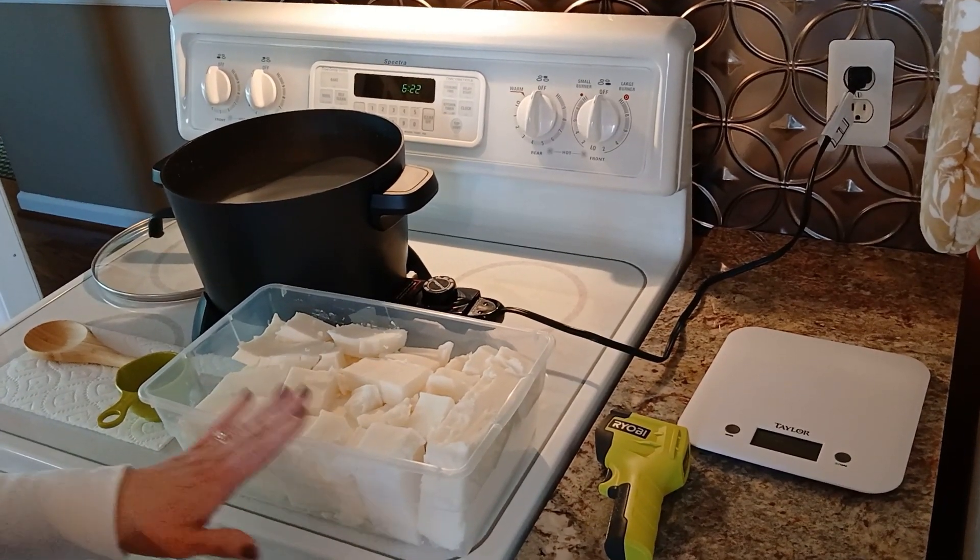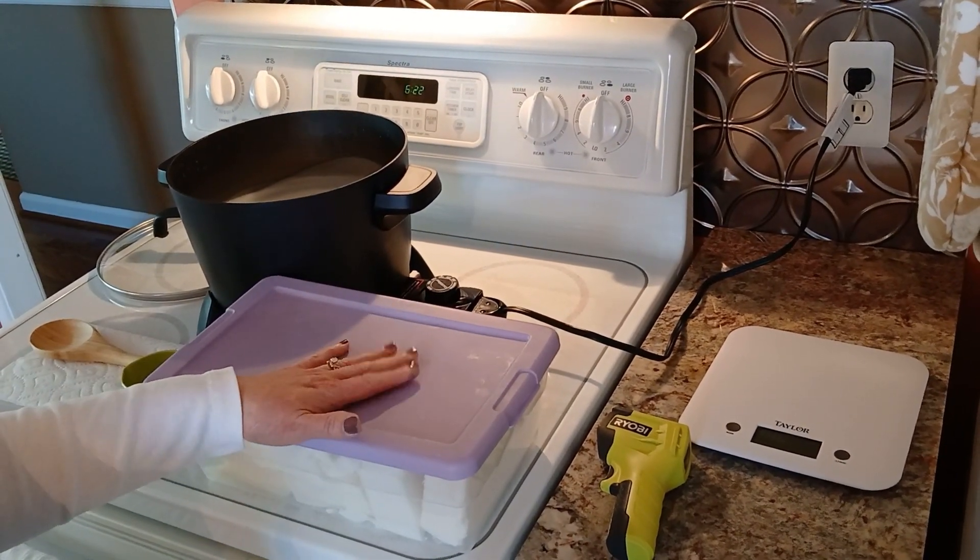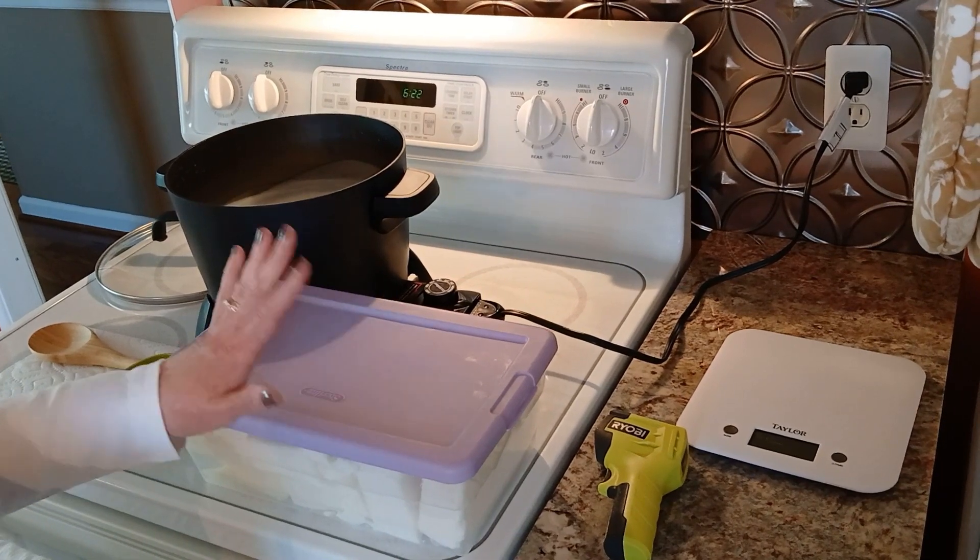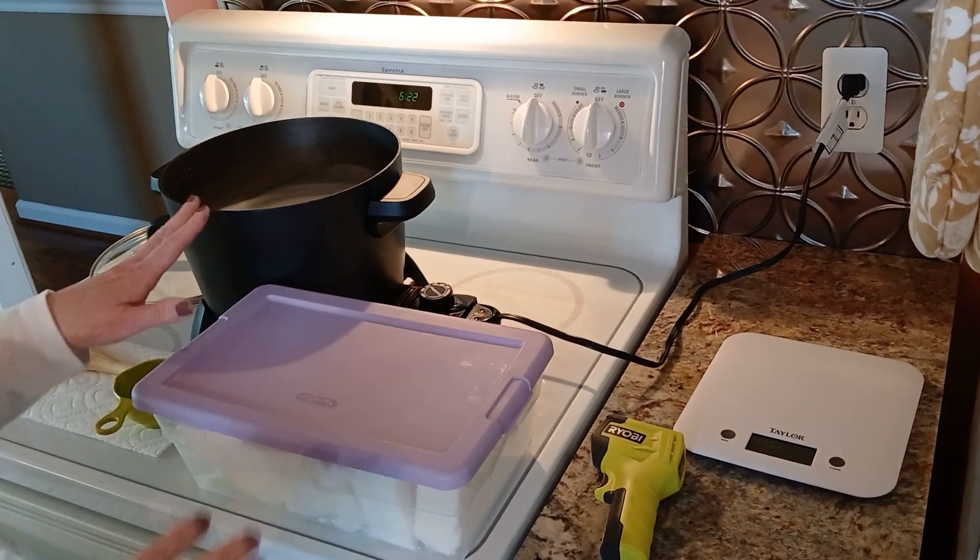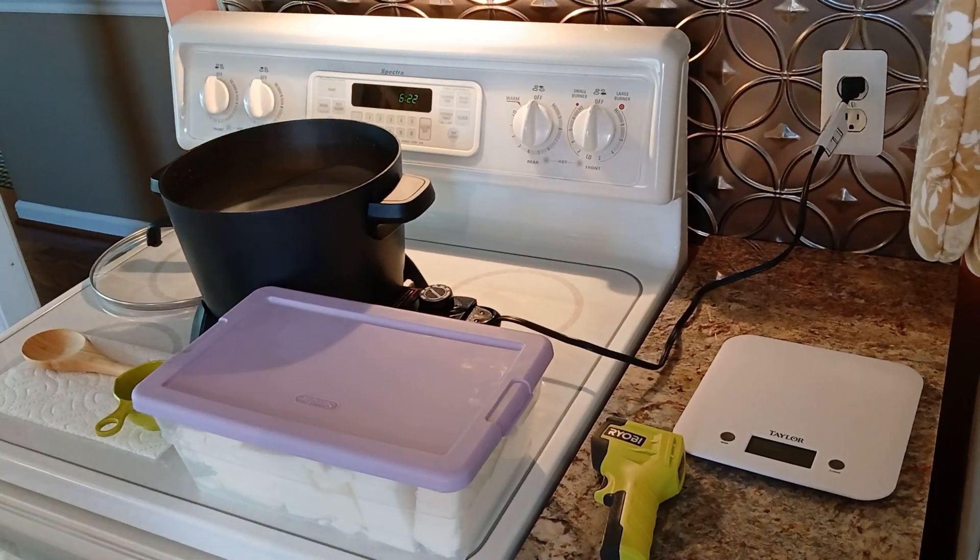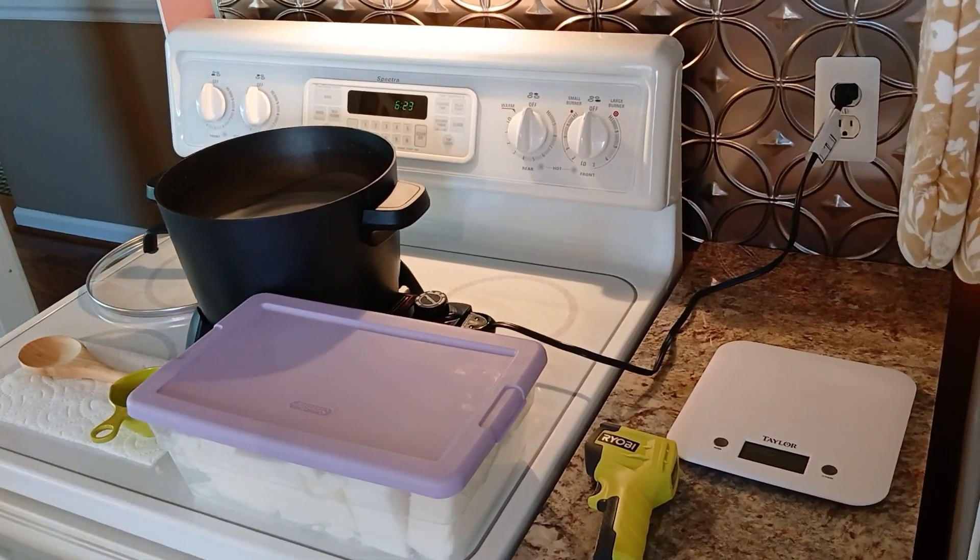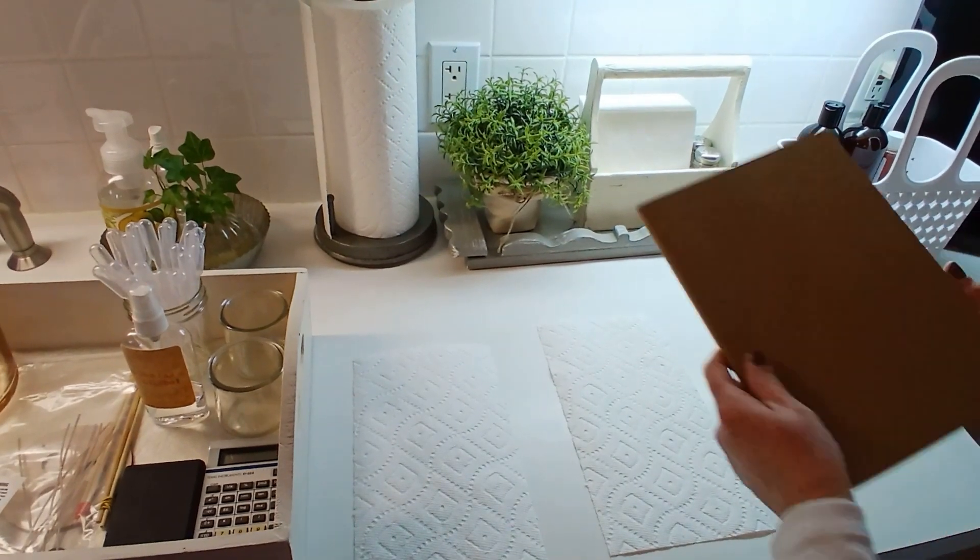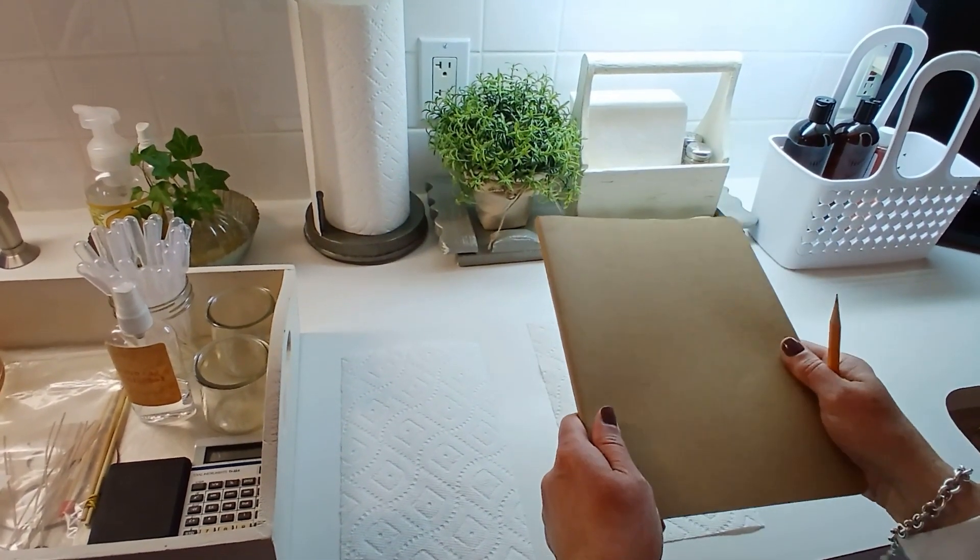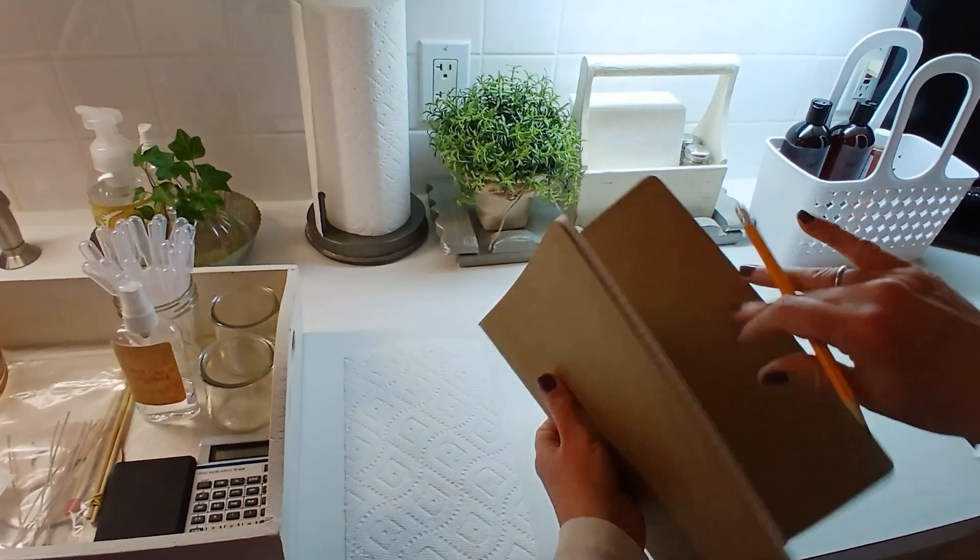He's going to put some more wax in the pot. This is our little presto pot where we melt the wax. I'm going to go over to my counter where we're going to set up. On this side, what we've got is, first, most importantly, the magic book. This is where we keep all our candle recipes. This is our 2024 candle notebook with all of our recipes.